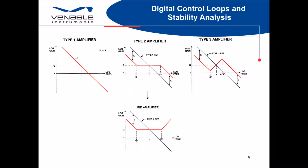When talking about digital controllers, we still have the type 1, type 2, and type 3 amplifier implementations that we are familiar with from the analog world, but now we also include the PID type amplifier often used in the digital world. K-Factor is one of our most useful aids in synthesizing amplifiers to determine the cutoff frequencies for our poles and zeros for our amplifier transfer function. The rules governing application of the K-Factor to determine the cutoff frequencies still apply in digital systems and can also be applied to the PID amplifier as well.